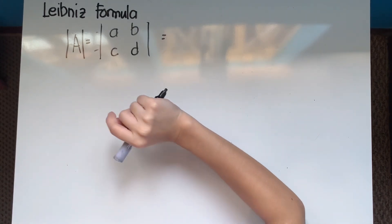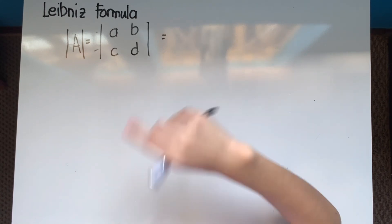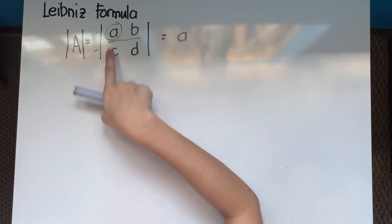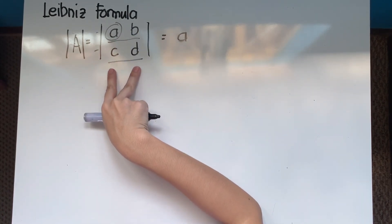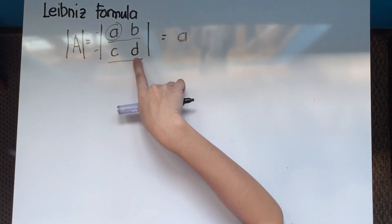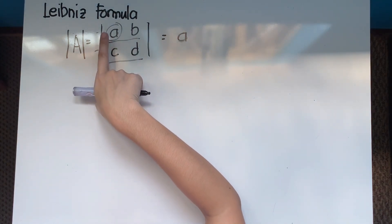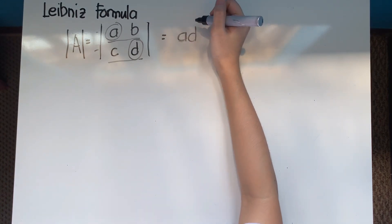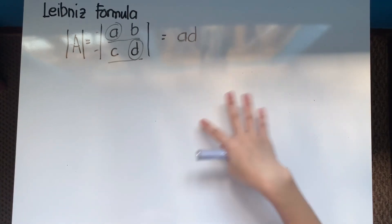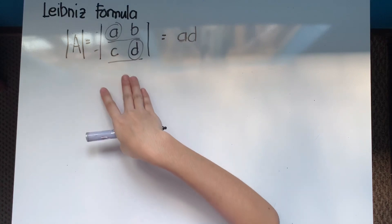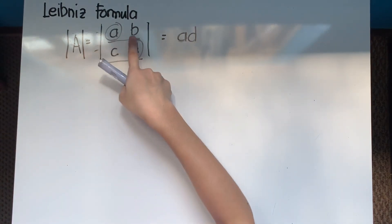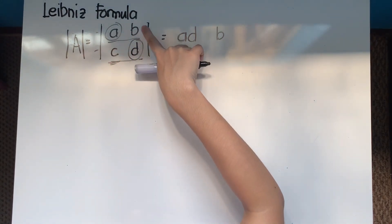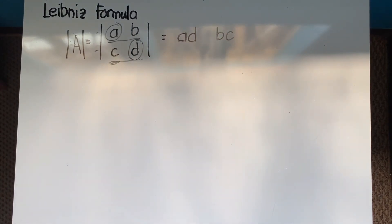The rule is that the entries chosen must be in unique columns. For example, if I choose entry 'a' from the first row (first column), I must pick an entry from a different column in the second row — which leaves only 'd'. Then I find all possible combinations. If I choose 'b' from the first row, I must choose 'c' from the second row, since 'd' would be in the same column as 'b'.